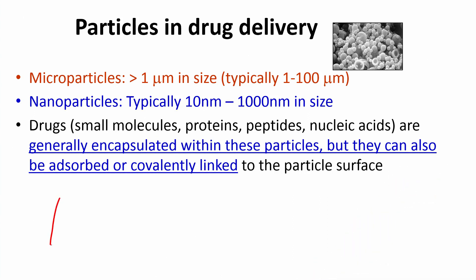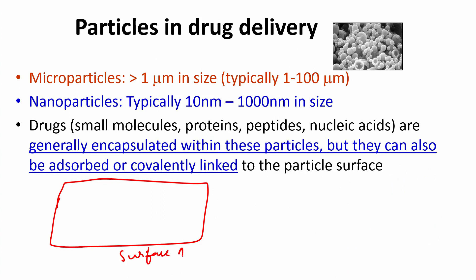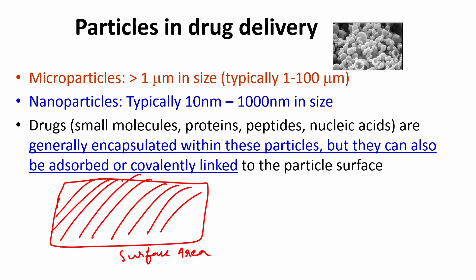Earlier you had a macro device with a certain surface area that was fairly low when you compare the amount that can be added in the bulk volume versus something on the surface — the surface-area-to-bulk ratio was fairly low. But now you have broken this down into several small particles, so the amount of drug that can be loaded on the surface has become quite significant when you compare it to the amount of drug in the bulk volume. With micro and nanoparticles you now have the capability to put things on the surface and still load quite a lot of drug, and as the size decreases the surface area to volume ratio increases.